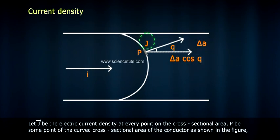Let J⃗ be the electric current density at every point on the cross-sectional area. P be some point of the curved cross-sectional area of the conductor as shown in the figure.